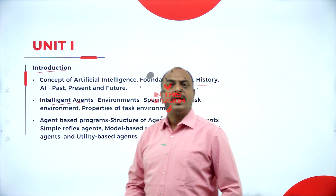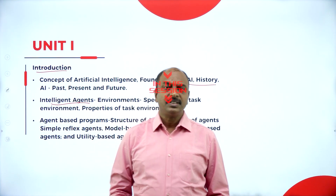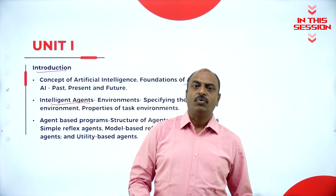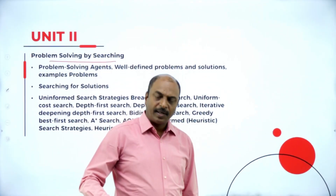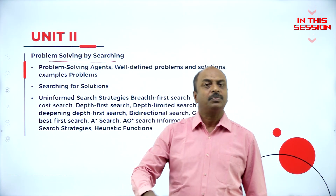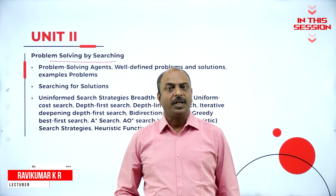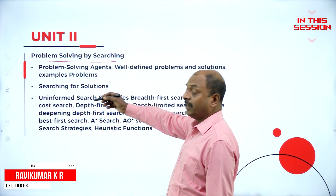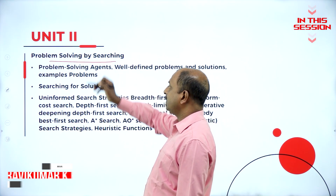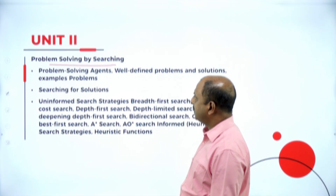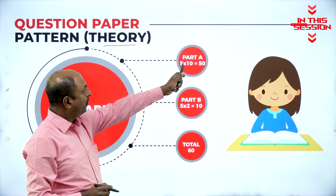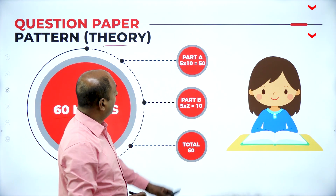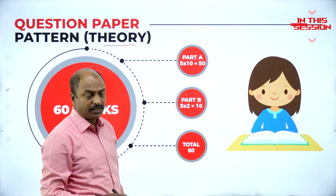Agents are nothing but a type of sensors — they sense the environment and act accordingly. We combine different modules or small problems to get meaningful results, and the same concept we apply with respect to AI, artificial intelligence. Here you will get five questions from each and every unit, of 10 marks each.